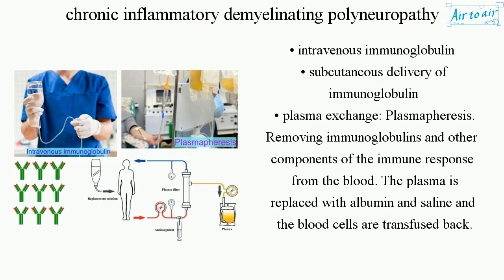Intravenous immunoglobulin or subcutaneous delivery of immunoglobulin may be used. Plasma exchange, or plasmapheresis, involves removing immunoglobulins and other components of the immune response from the blood. The plasma is replaced with albumin and saline, and the blood cells are transfused back.